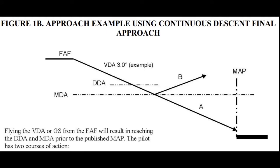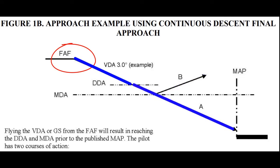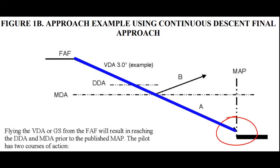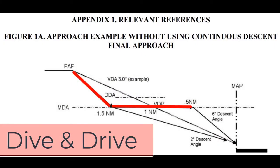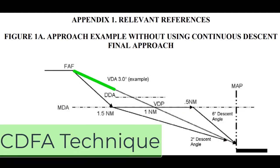This figure shows the exact same approach using the Constant Descent Final Approach technique. Under this technique, the pilot makes a pitch and power change at the FAF in order to begin their descent. Once at the derived descent altitude, the pilot makes the decision to execute a missed approach or to land. If the decision to land is made, the pilot does not need to make any further pitch and power changes, as they've already calculated a constant descent from the FAF to the runway. The only other pitch and power change needed is during the landing itself.